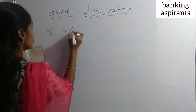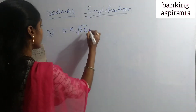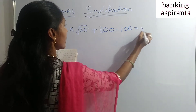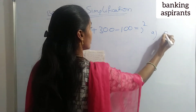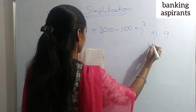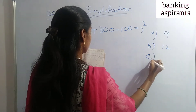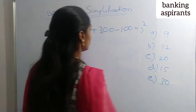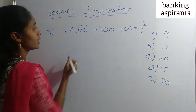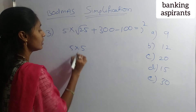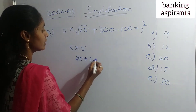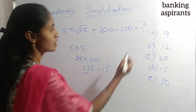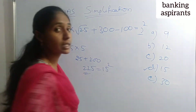Third question: 5 into root 25 plus 300 minus 100 equals question mark squared. Options: A) 9, B) 12, C) 20, D) 15, E) 30. Solution: root 25 equals 5. 5 into 5 is 25. 300 minus 100 is 200. 200 plus 225 equals 225, which is 15 squared. So the answer is D) 15.